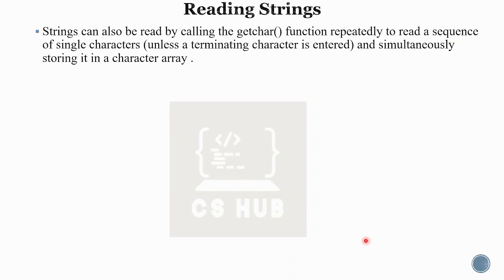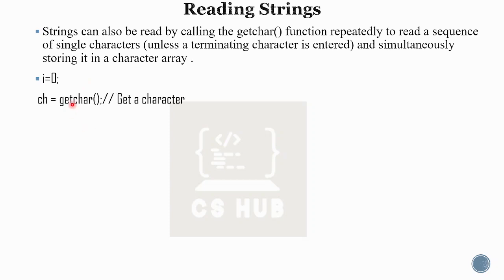Now let's look at getchar — it is used repeatedly to read single characters. We enter a terminating character to signal the end of input. Characters are stored in a loop. As the string is being read, when we type the terminating character, the string is stored. This is the getchar function.